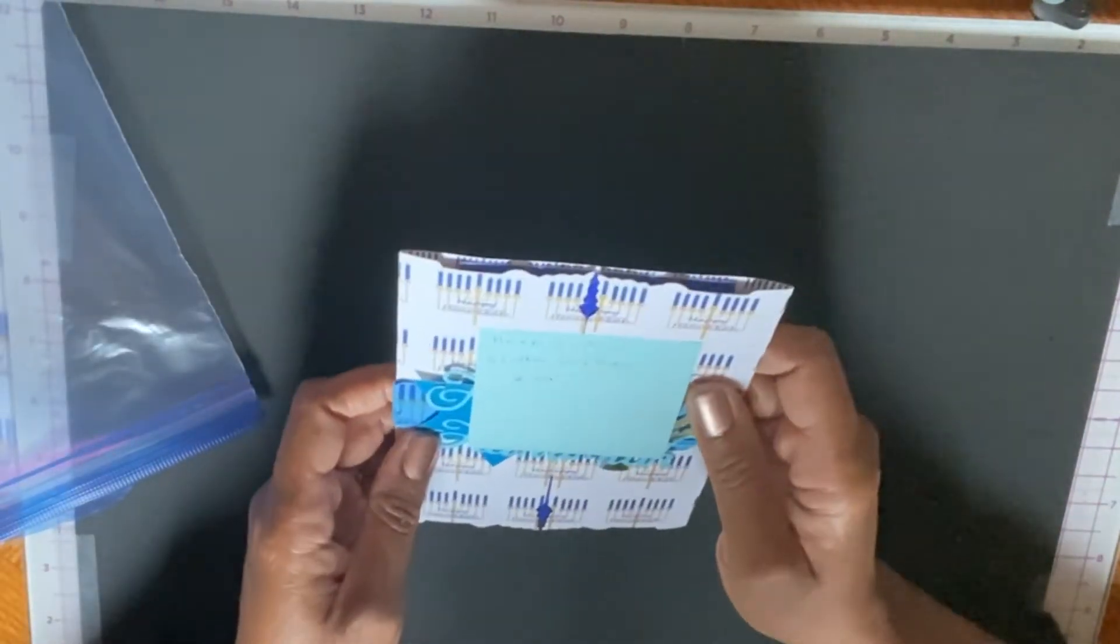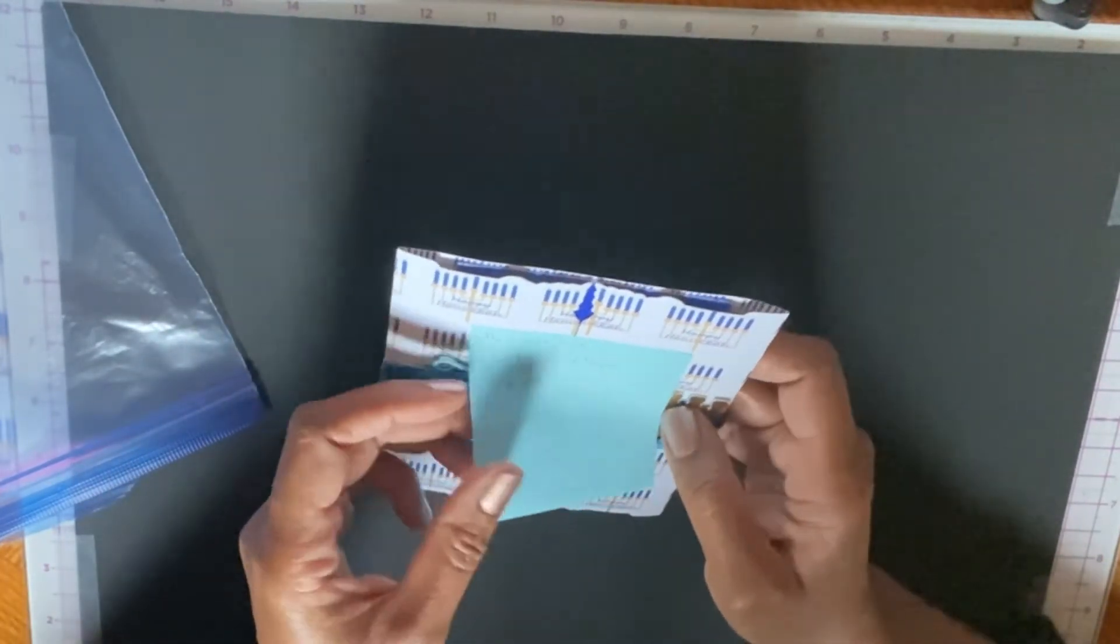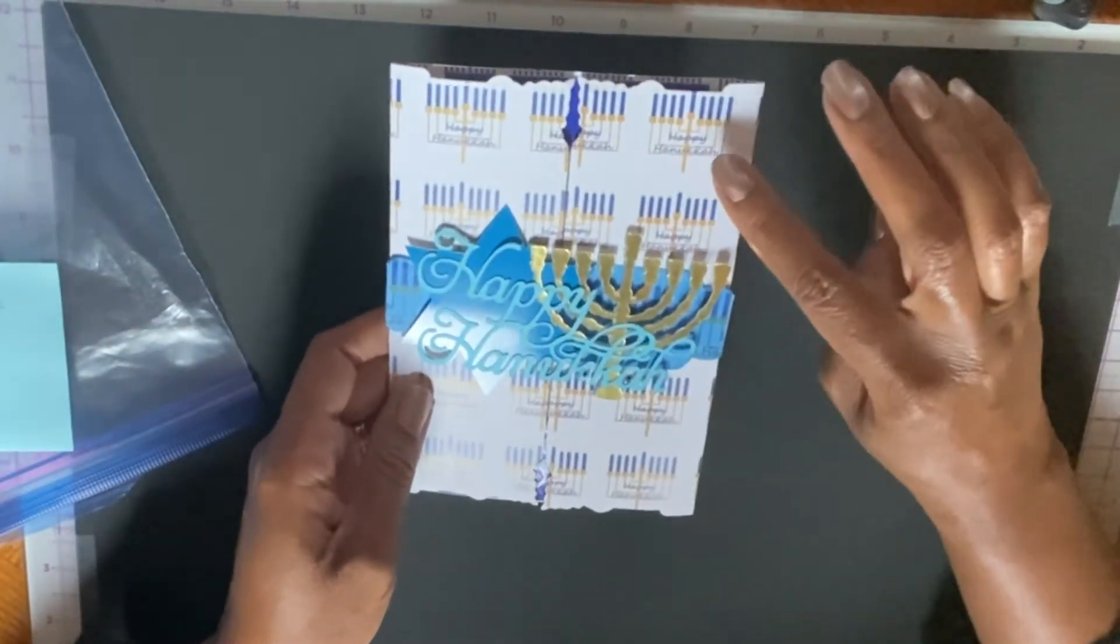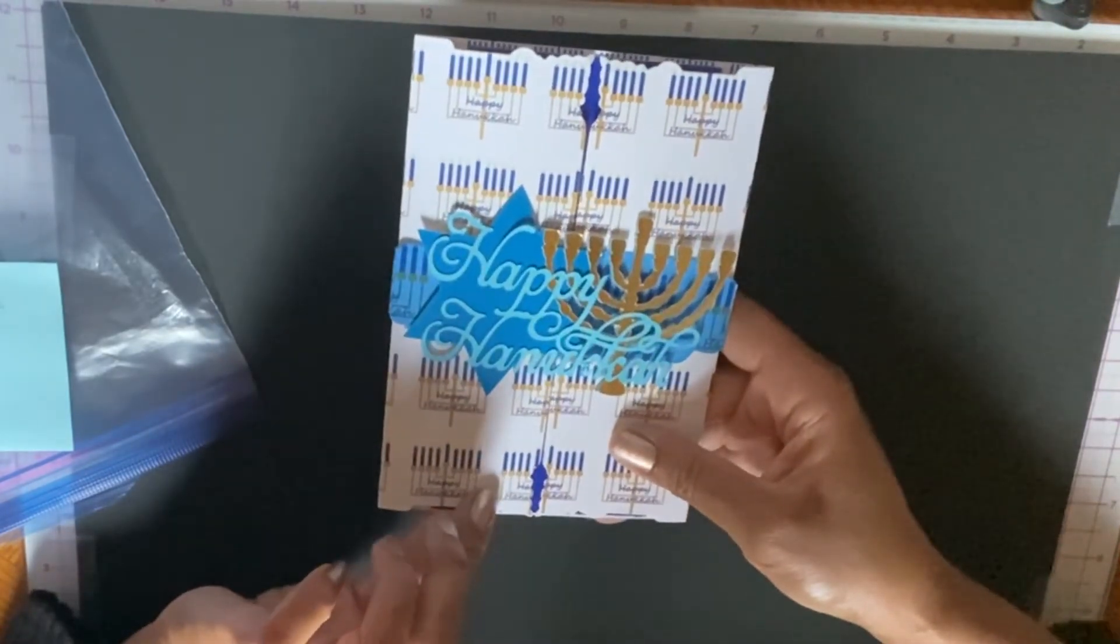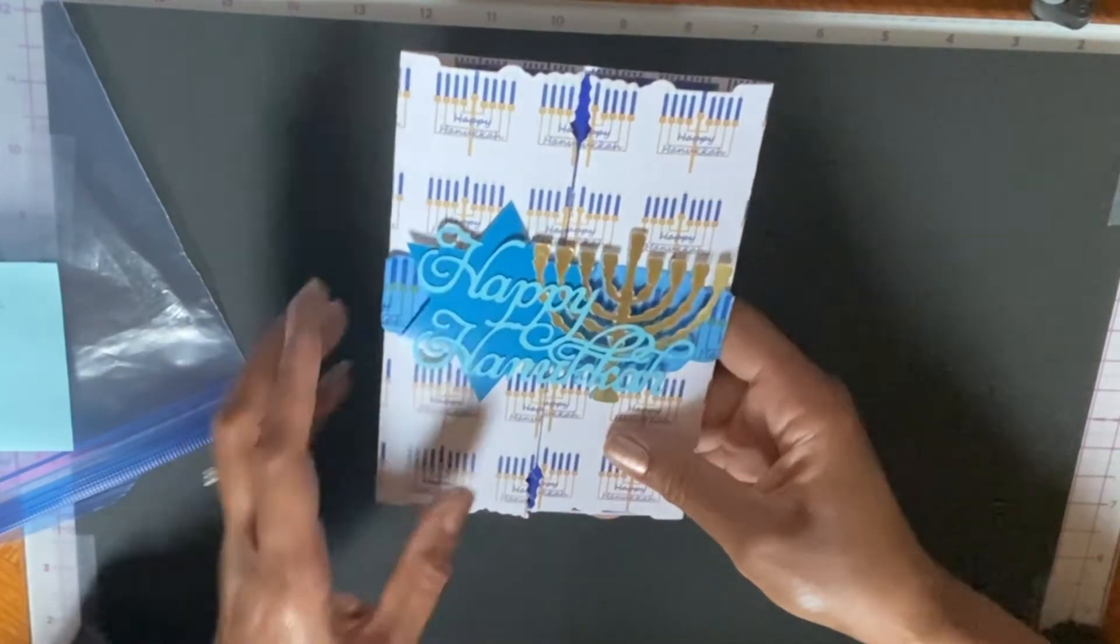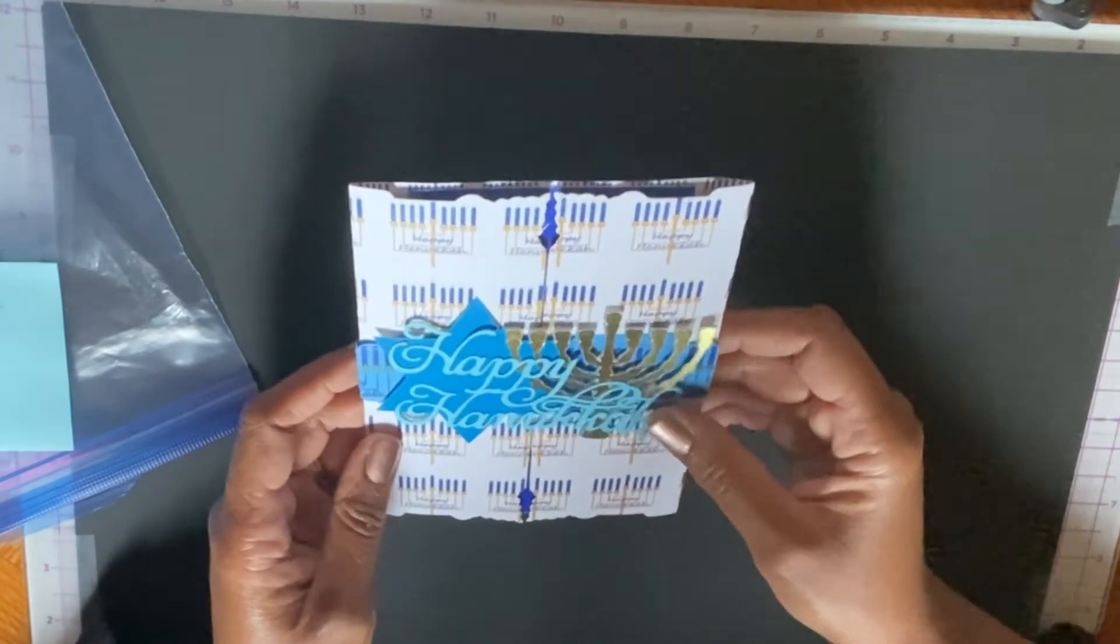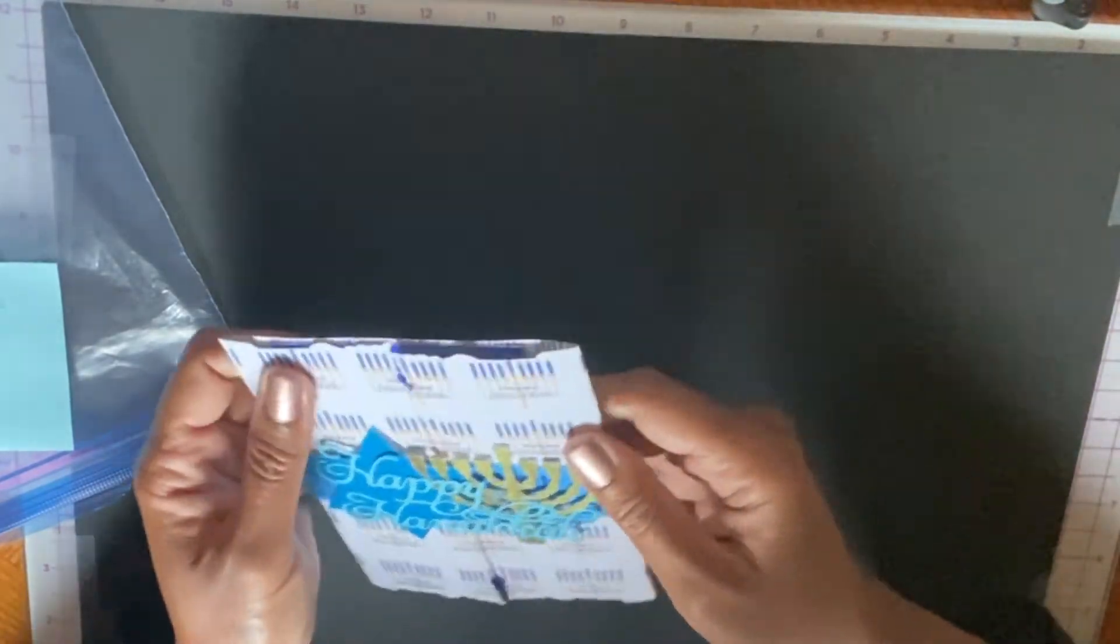This is a shutter card using an Anna Griffin die. Oh my goodness. So this is my Hanukkah paper download and then she used the Anna Griffin shutter card die to make this card. Oh wow, this just came out so pretty.